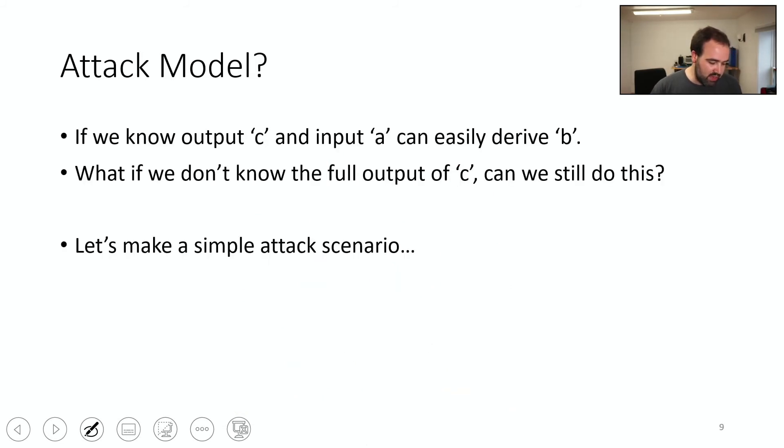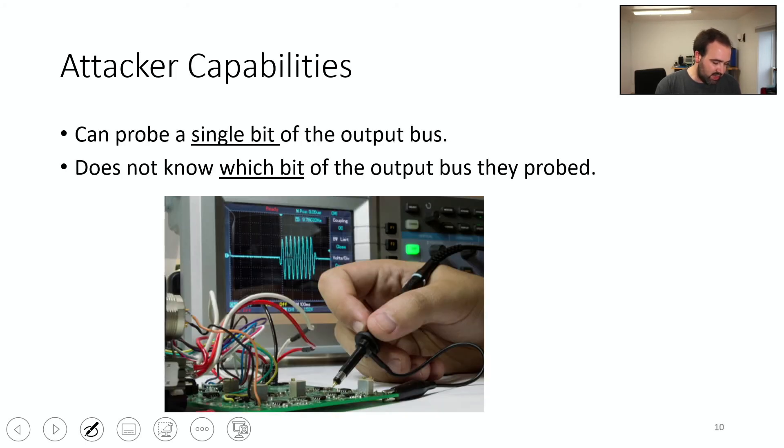So the attack model is now that we don't know the full output of C, but we only get a single bit of it. So this is really what we're trying to do. And if you're interested in seeing how this works, there is sort of a lab that will run through this. The basic idea of it is that the attacker can probe a single bit of the output bus, but they don't even need to know which bit of the output bus they probe.